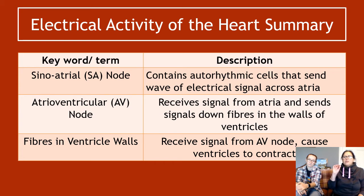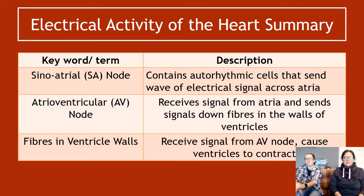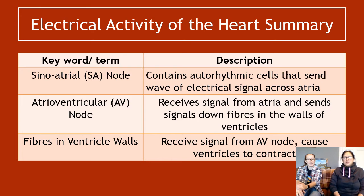To summarize: the SA node contains auto-rhythmic cells that send a wave of electrical signals across the atria, and is located on the wall of the right atrium. The AV node receives signals from the atria and sends them down the fibers of the ventricle walls. Those fibers then cause the ventricles to contract. That is the complete story of electrical activity in the heart.